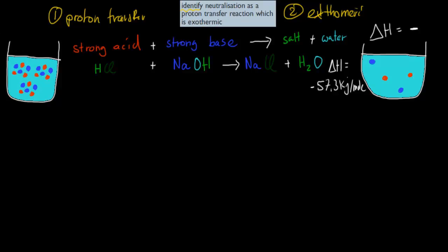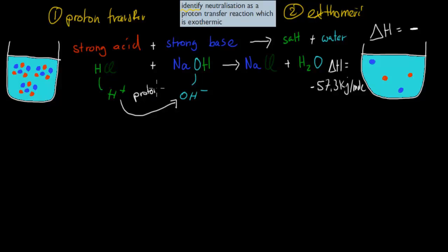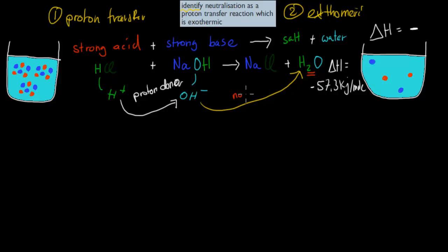In this case, we have hydrogen from the acid, which would usually make things acidic. And we have a hydroxide from the base, which would usually make things basic. What happens is this proton is transferred from the acid to the hydroxide, because an acid is a proton donor, thereby creating water. Water itself has no pH — it's neutral.